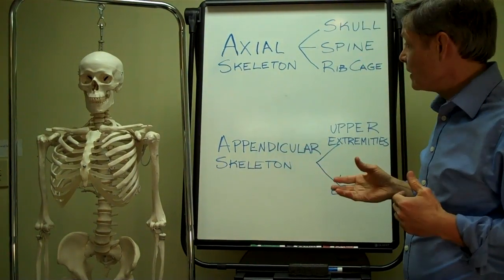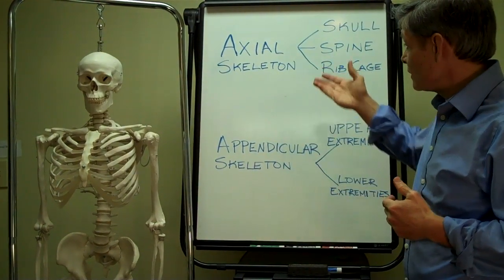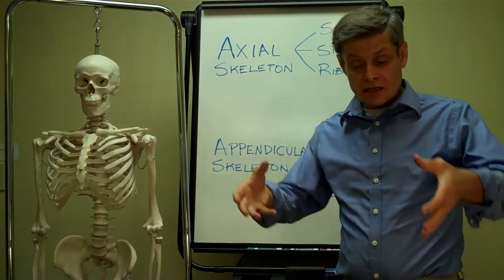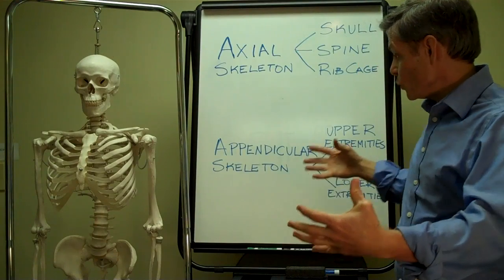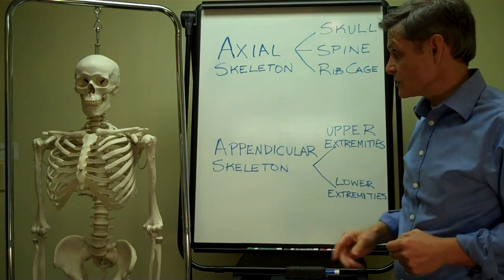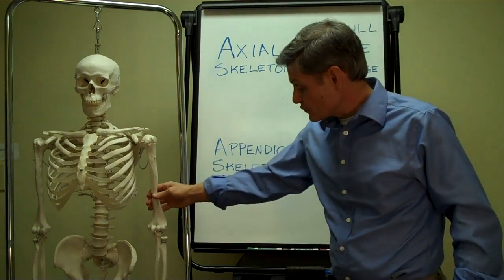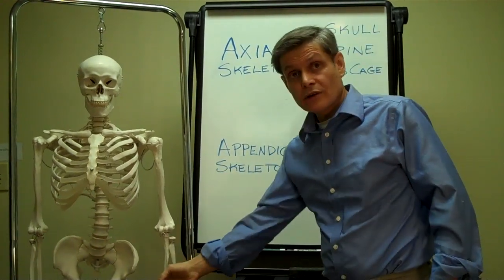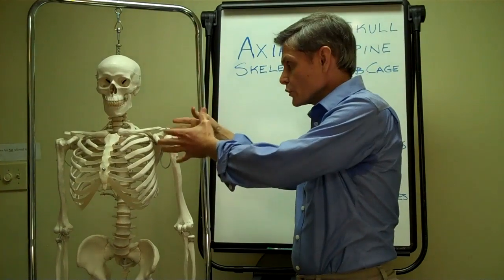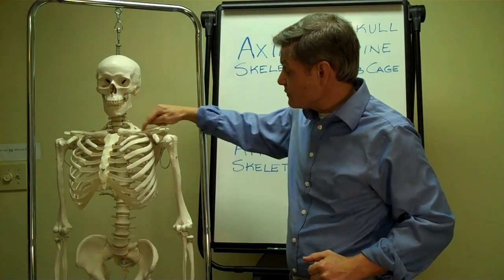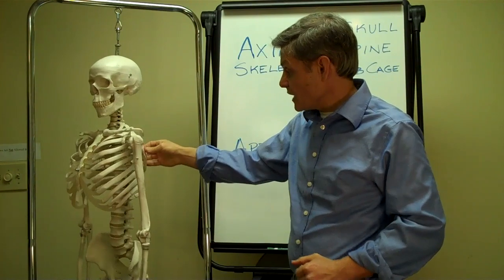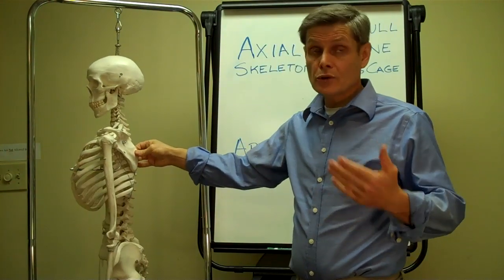The entire axial skeleton, as the name indicates, forms the central axis of the skeleton. Upon that central axis, we connect the appendicular skeleton — the extremities, the upper extremities and the lower extremities. The upper extremities start with the pectoral girdle, which consists of the clavicle, or collarbone, and the scapula, otherwise known as the shoulder blade.